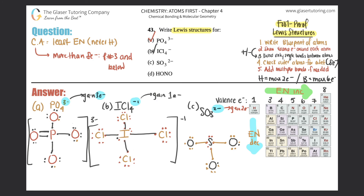Checking outer elements: this oxygen has two, four, six, eight — good. This oxygen has two, four, six, eight — good. But this oxygen has two, four, six, seven. However, there's one lone electron here and one on sulfur, so I bring that electron over to form a double bond. Now that oxygen has two, four, six, eight. Checking sulfur: two, four, six, eight, ten — sulfur is in period three, so it can have an expanded octet. We bracket the structure and put a two minus. Part C is done.